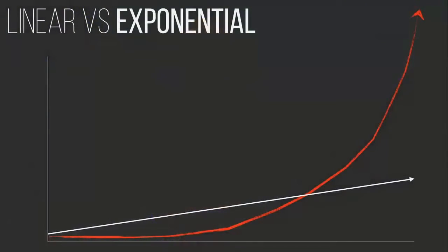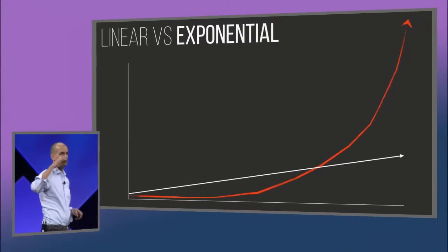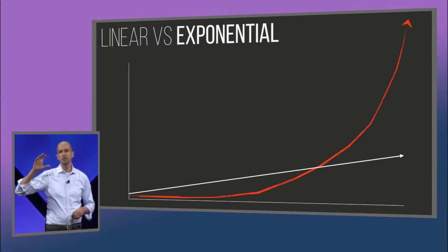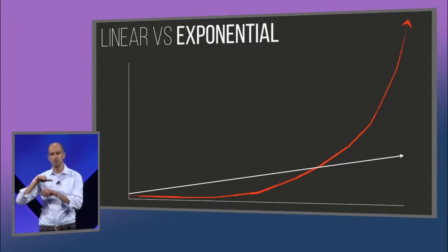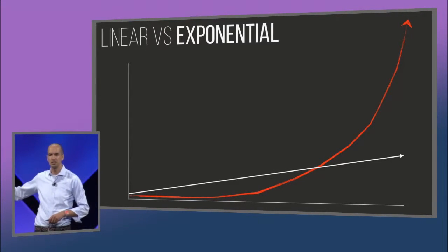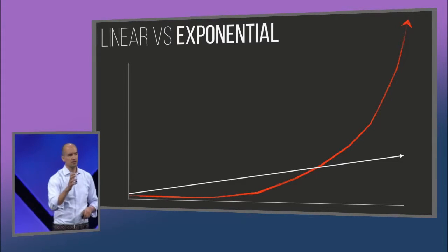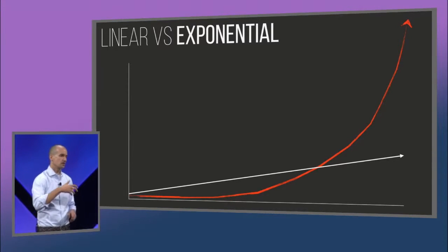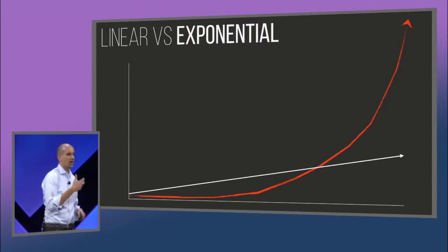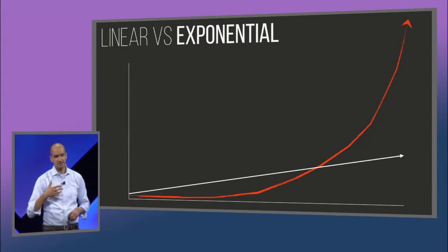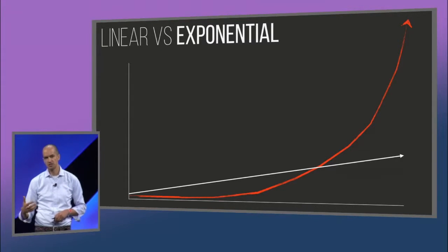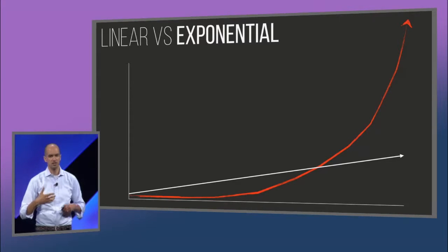When you map exponential curves out and compare them to linear curves, two interesting things happen. There's a crossover point. The important thing to know about linear thinking is you are hardwired to think linearly, whereas a lot of the technology trends we're seeing today are exponential, so they become very hard to actually grok.